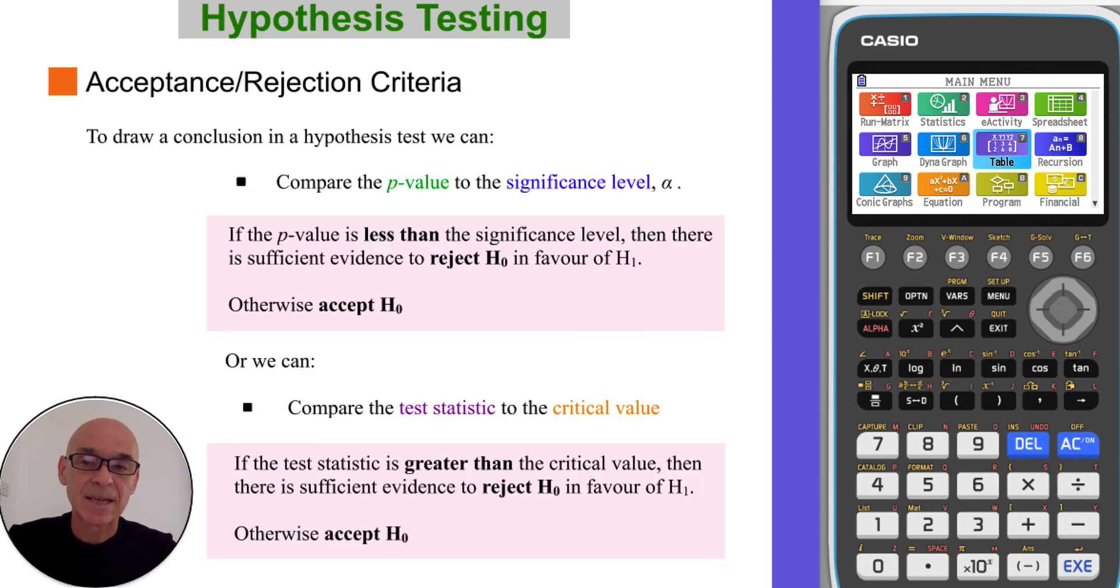So onto step five, acceptance and rejection criteria. There are two ways that we can draw a conclusion in a hypothesis test. We either compare the p-value to the significance level. And if the p-value is less than the significance level, then there is sufficient evidence to reject the null hypothesis.